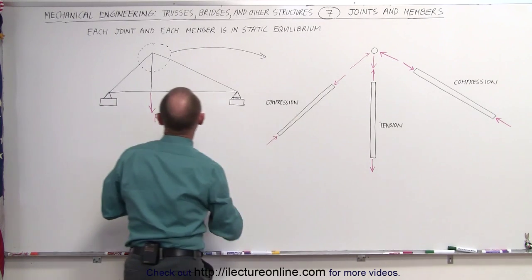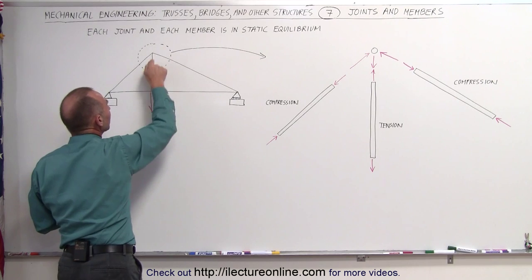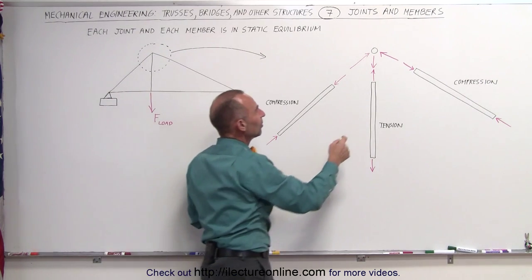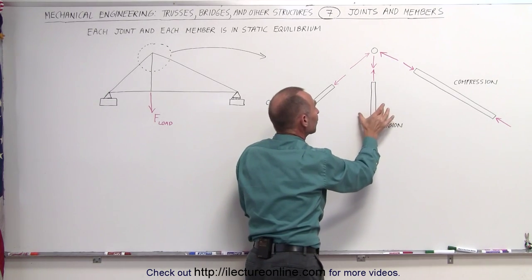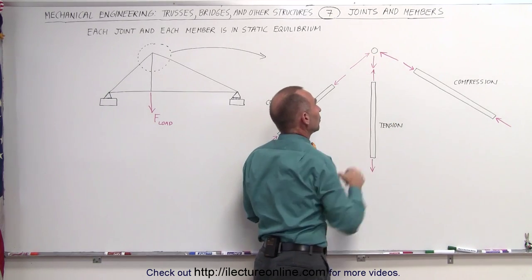At the same time, since the beam is pulling on the joint right there, you can see that the force on the joint is downward because that's the force of the beam, the member pulling down on the joint.